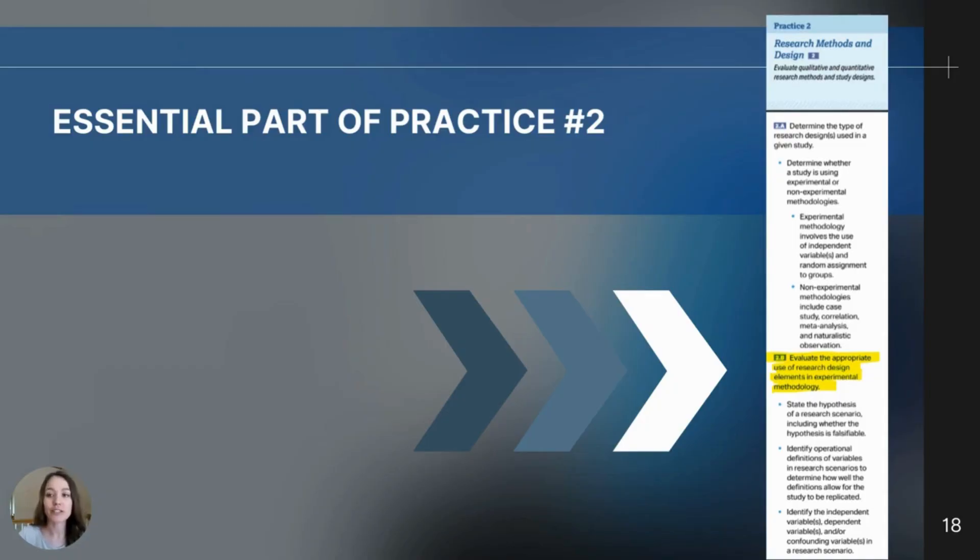This entire video will guide you through one of the skills the college board wants psychology students to be able to master and that is what they call practice two research methods and design. This video will focus in on 2b which asks students to be able to evaluate appropriate use of research design elements in experimental methodology. If you notice underneath that highlighted section there's multiple steps like state the hypothesis, identify the operational definitions of variables, and so on. On each slide following this one you'll notice a note just like this. These notes come from this practice two section and they are the different tasks that you need to be able to do and identify in experimental studies.